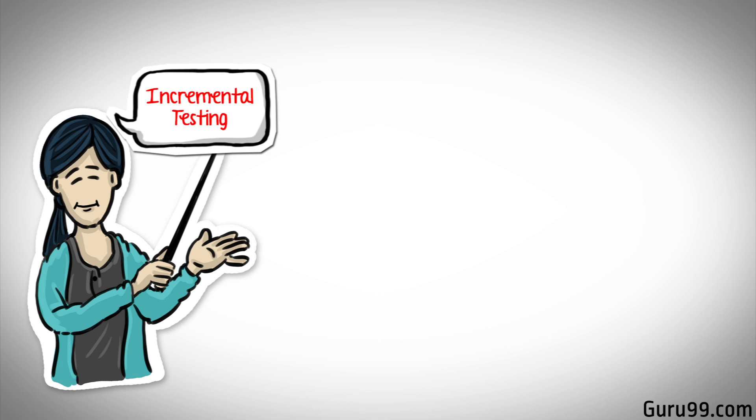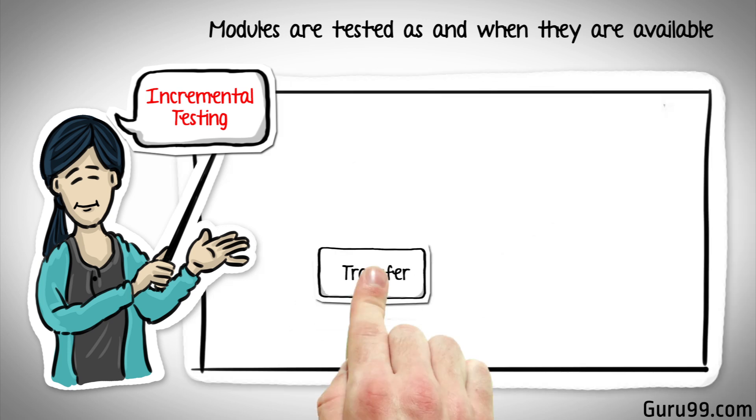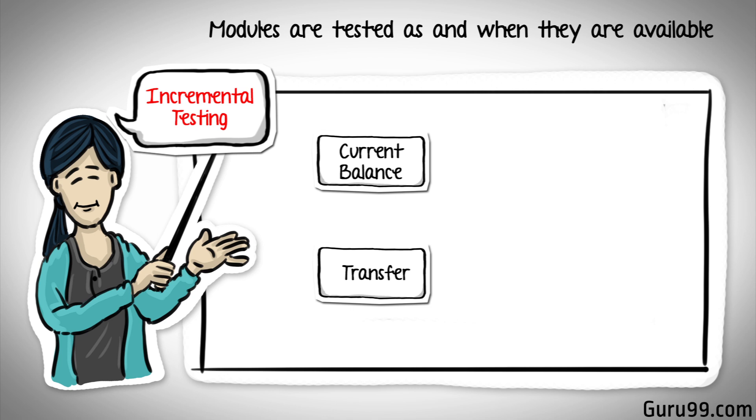Alternatively, you could use the incremental approach, where modules are checked for integration as and when they are available. Consider that the transfer module is yet to be developed, but the current balance module is ready. You will create a stub, which will accept and give back data to the current balance module.